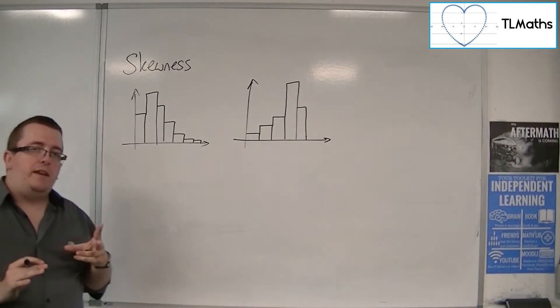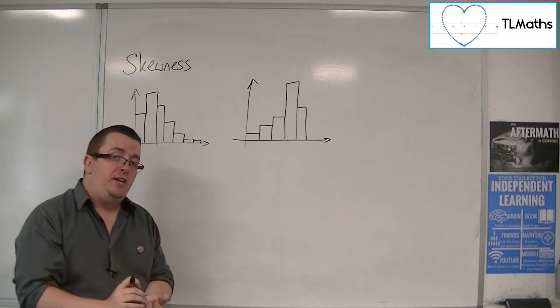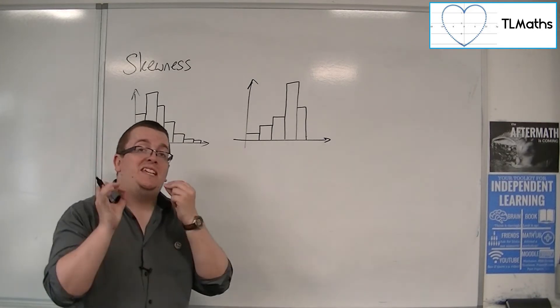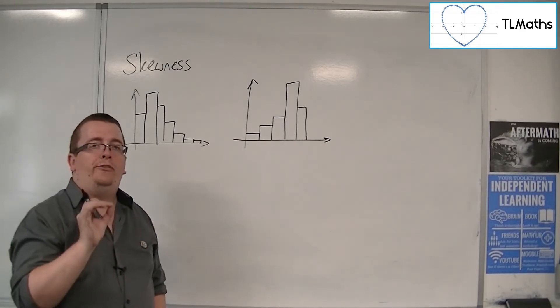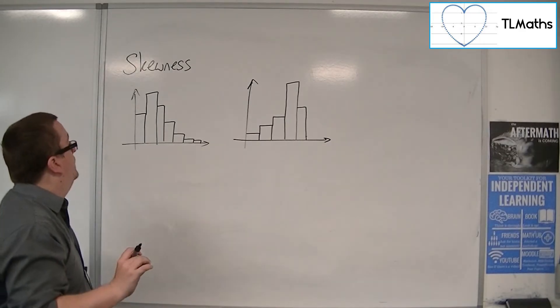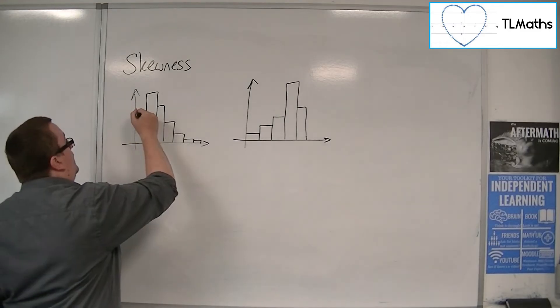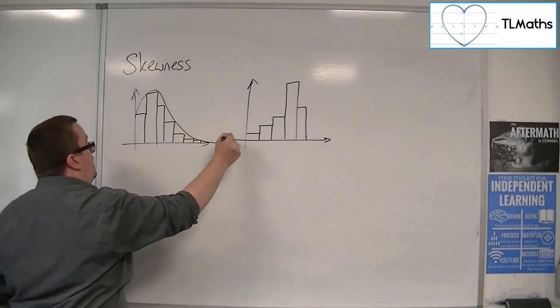What you are interested in with looking for skewness is looking for the tail. The direction of the tail tells you what type of skewness it is. So this is like having a tail that's going that way.